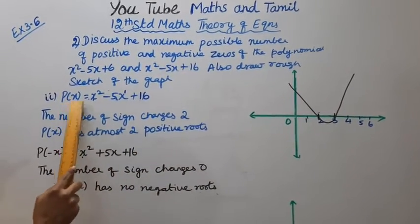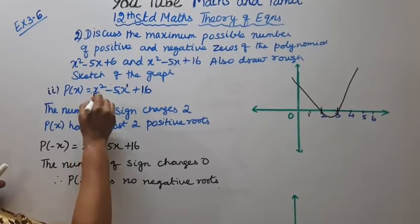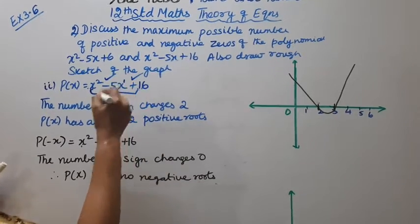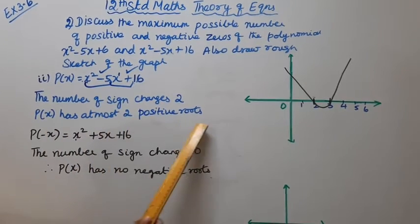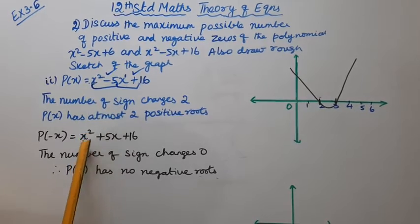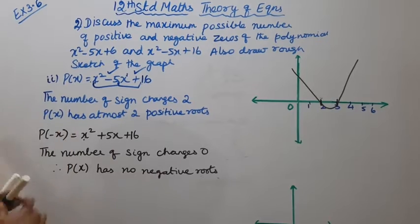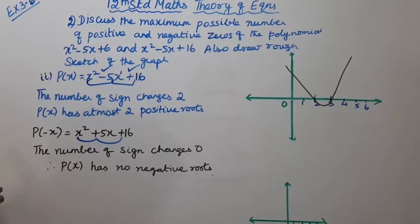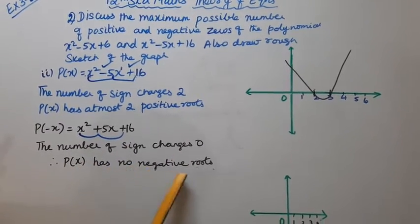Now P(x) = x² - 5x + 16. The signs go plus to minus — that is one change — then minus to plus — that is another change. The number of sign changes is 2, so P(x) has at most 2 positive roots. For P(-x) = x² + 5x + 16, all signs are plus; the number of sign changes is 0. Therefore P(x) has no negative roots.